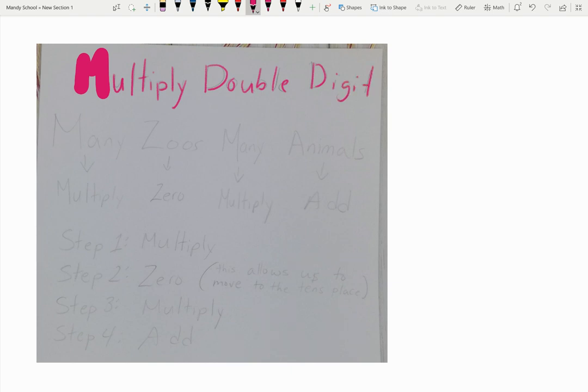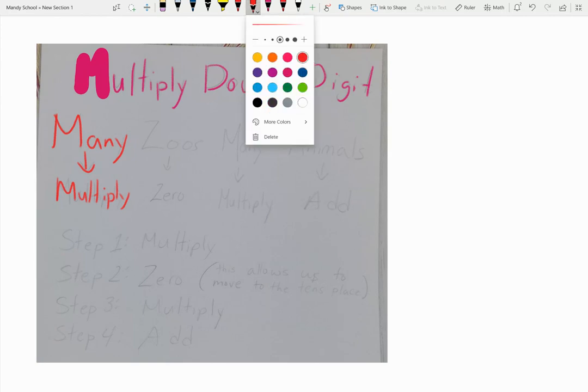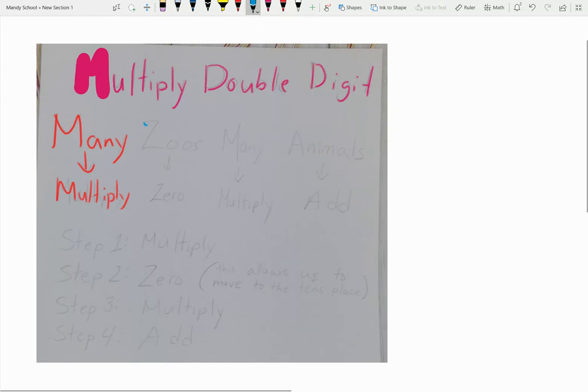There's a way to kind of memorize, I know this is review for all of you. There's a way that I want you to start memorizing how to remember your multiplying with double digits. And it's called Many, which basically is the acronym for multiply. Many zoos, and zoos means you add the zero, especially when it's time for the place value.